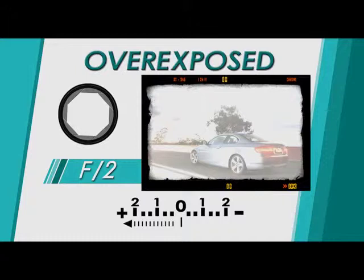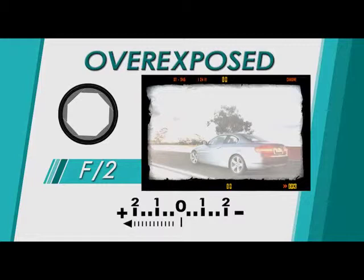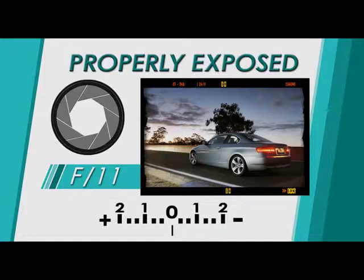An overexposed image will be too bright and you'll lose detail in the highlights. When the little arrow on your camera's light meter is to the left of the center point, it is indicating that the image will be overexposed. To fix this, you can adjust the f-stop to a larger number to decrease the amount of light that is allowed into the camera. This will darken the image and allow the detail in your highlights to appear. It's important to check the light meter on every shot. By doing this before you take the photograph, you can save yourself from having to reshoot the photo because of poor exposure.